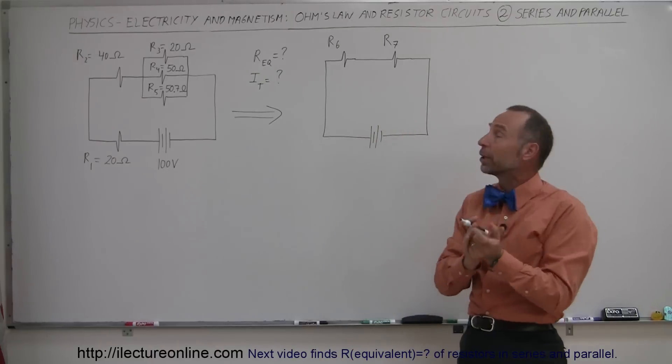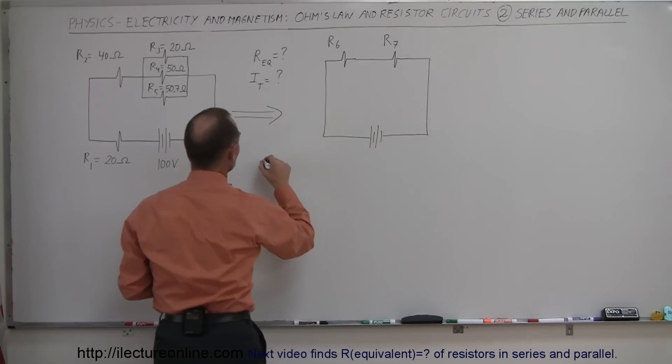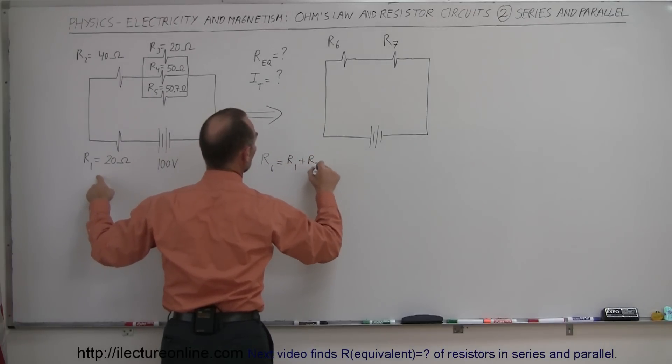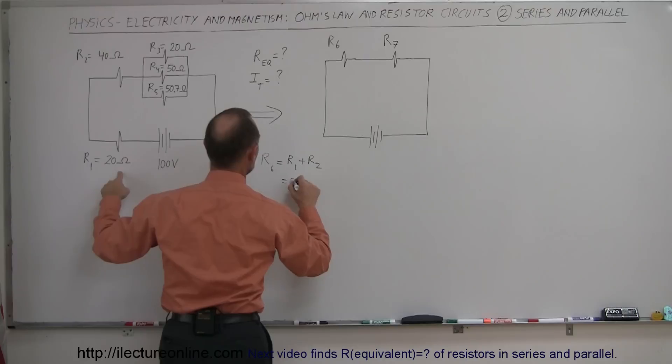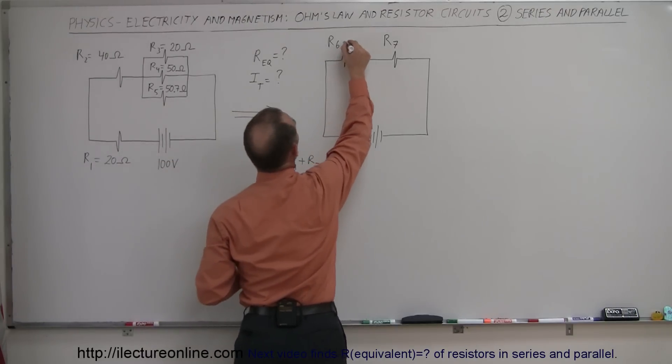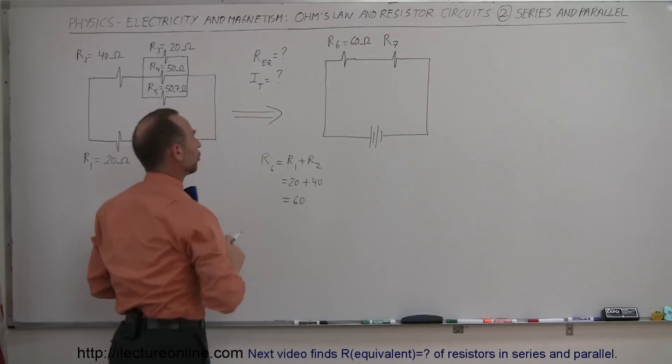Now the question is, how do we find that equivalent resistance? Well, if they're in series, we simply have to add them. So in this case, R6 is simply the sum of R1 plus R2, and so that would be equal to 20 plus 40, which is equal to 60 ohms. So this equivalent resistance is equal to 60 ohms, which is simply the sum of those two resistors combined.